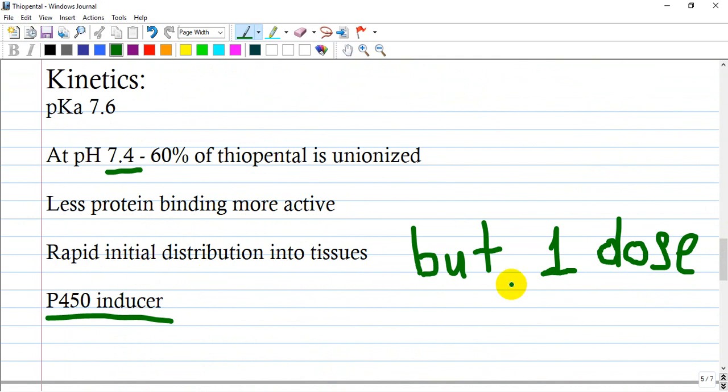One dose is great because of the rapid effect and rapid recovery. But if you are administering multiple doses, it will be redistributed to the tissues and accumulate, resulting in a prolonged effect from the drug being released later from the tissues where it accumulated. It is a P450 inducer and can induce metabolism of many drugs and decrease their duration of action.